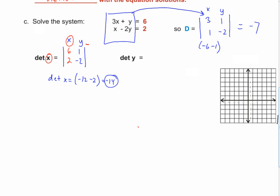Now write the matrix for the determinant of Y. For Dy, replace the Y column with the solution values six and two, and keep the X coefficients column as three and one. Go ahead and figure out the value of the Y determinant. The value of the Y determinant is zero — and that's fine; any variable determinant can be zero.